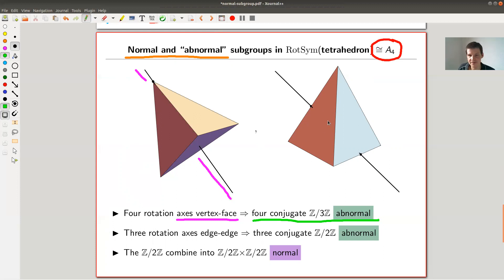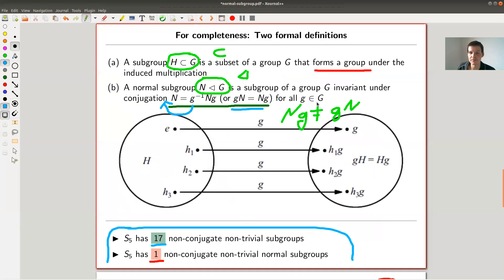Similarly, if you use your axis and you just hit right through an edge, and you come out on the other side on the opposite edge, you have three of them because you have six edges and they always come in pairs. So you have three of those edge axes. Same argument gives you three conjugate subgroups which are isomorphic to Z mod 2, which are abnormal. They're not normal, because of the same problem.